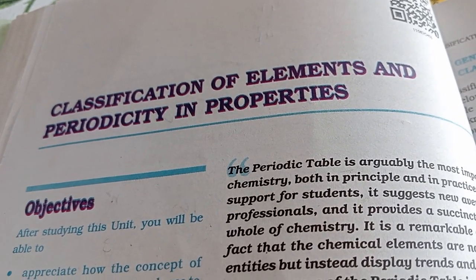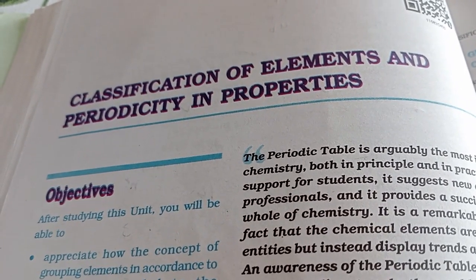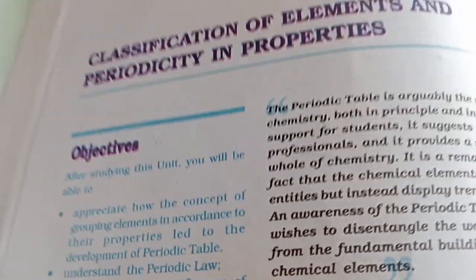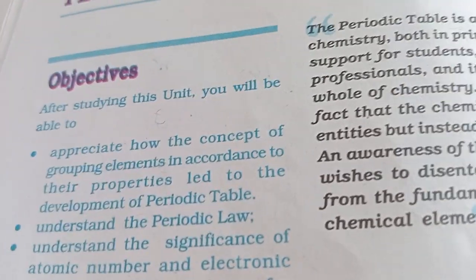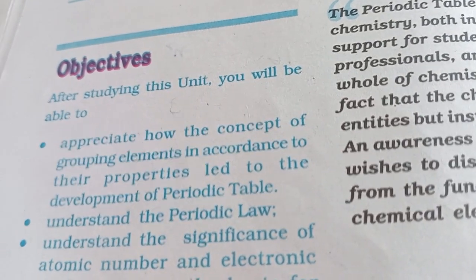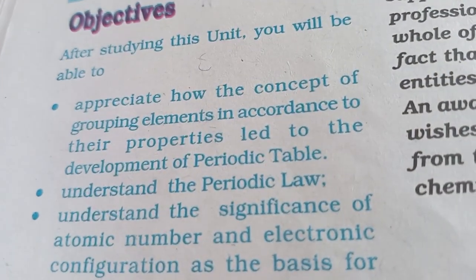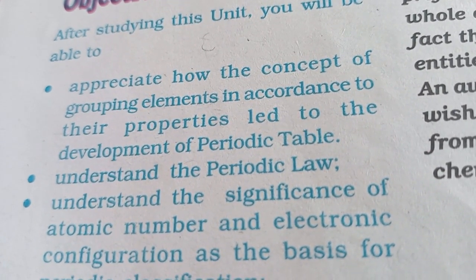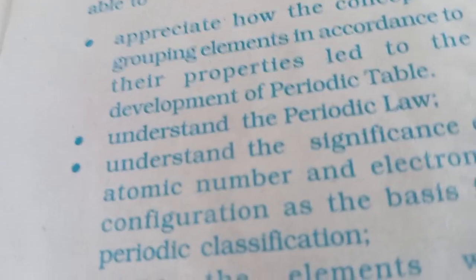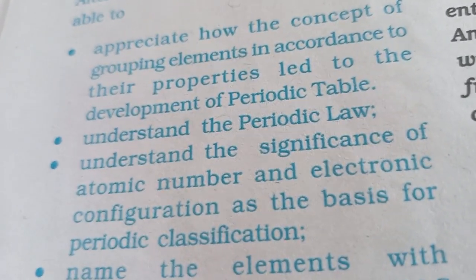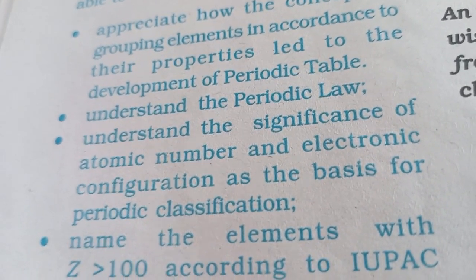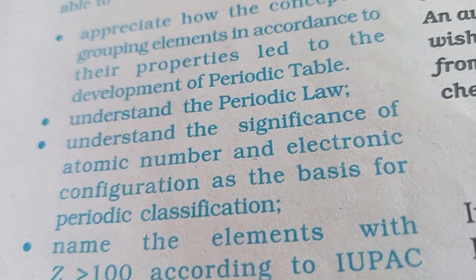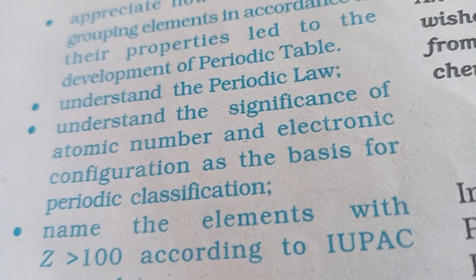Chemistry ke third chapter, Classification of Elements and Periodicity in Properties, ke objective aur summary aapko bata humgi. After studying this unit, you will be able to appreciate how the concept of grouping elements in accordance to their properties led to the development of the periodic table. You will be able to understand the periodic law and the significance of atomic number and electronic configuration as the basis for periodic classification.